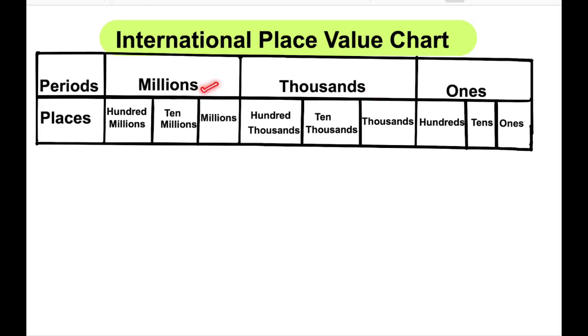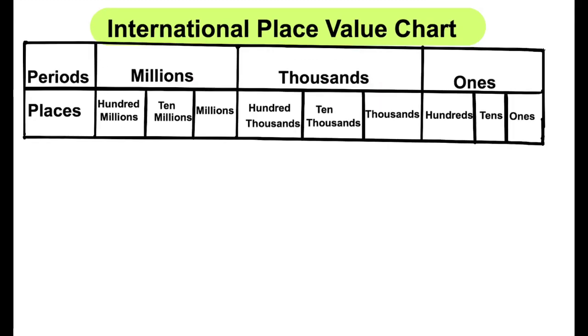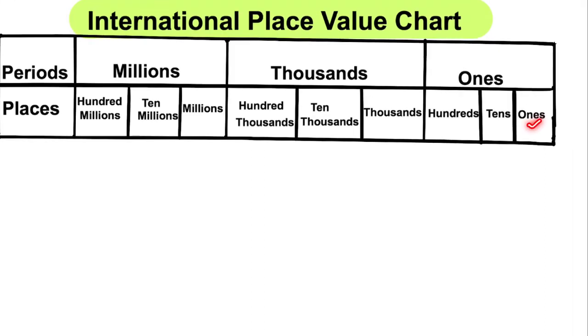Every period has three places. The ones period is divided into ones, tens, and hundreds.